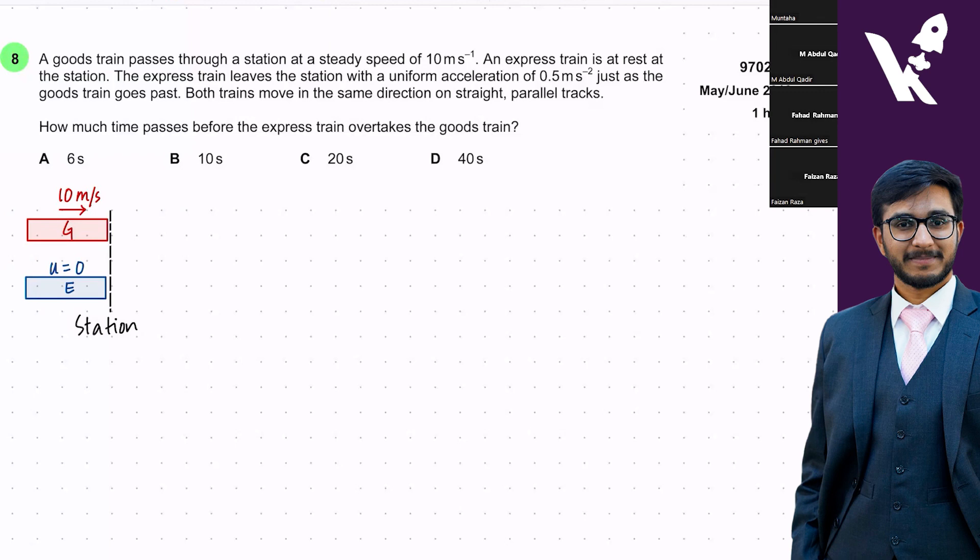The express train leaves the station with a uniform acceleration of 0.5. The express train is accelerating with a value of 0.5 meters per second square. It's picking up speed, but the goods train is already at a significant speed.